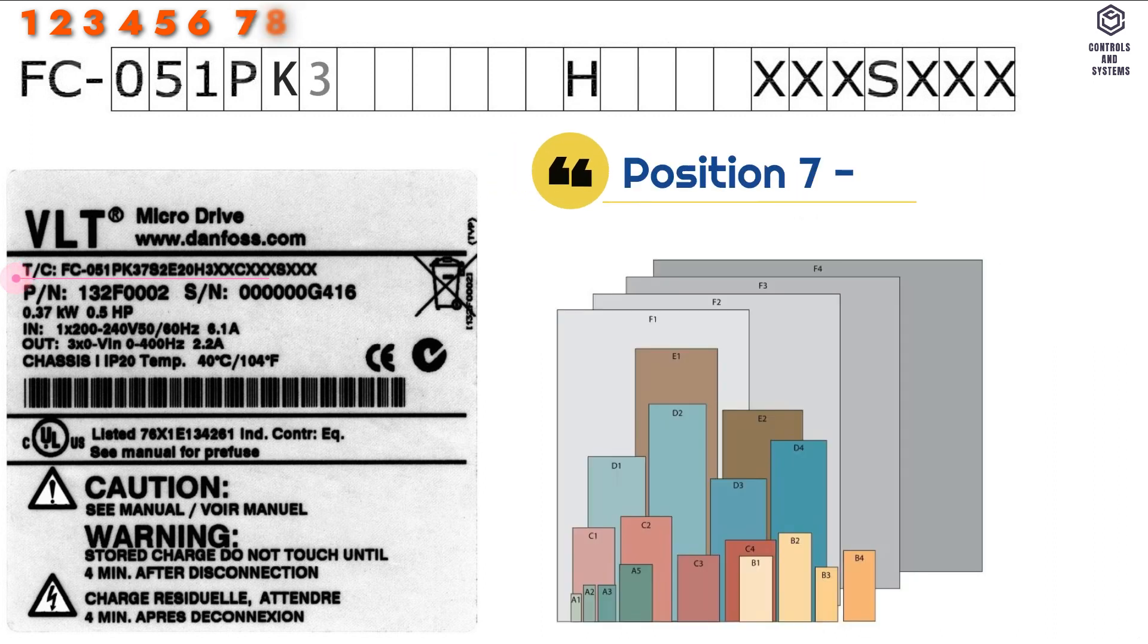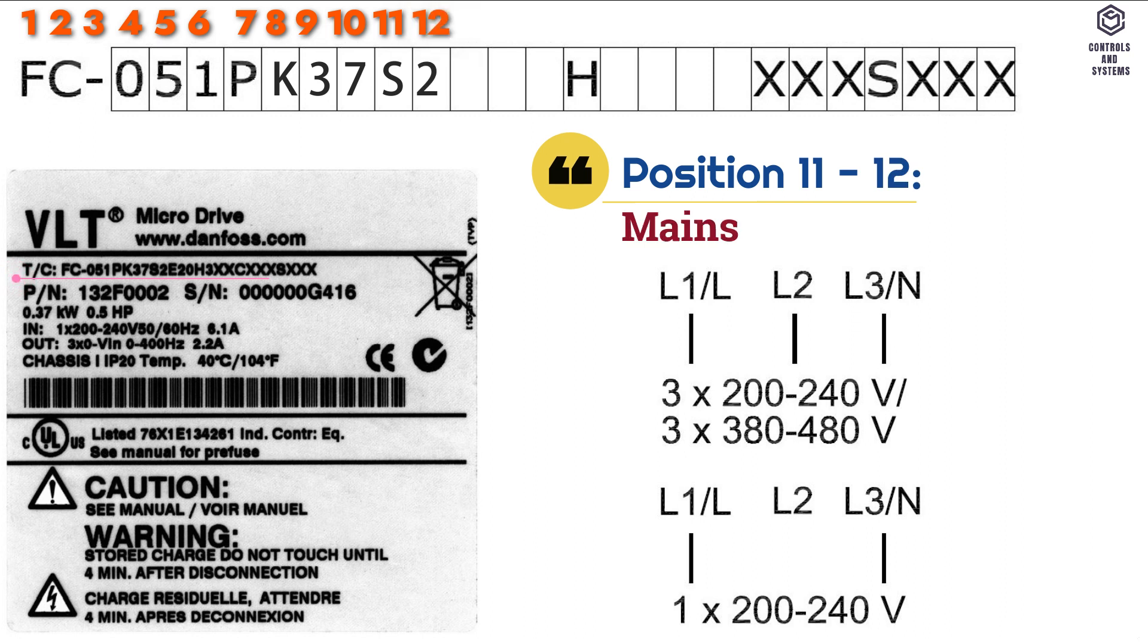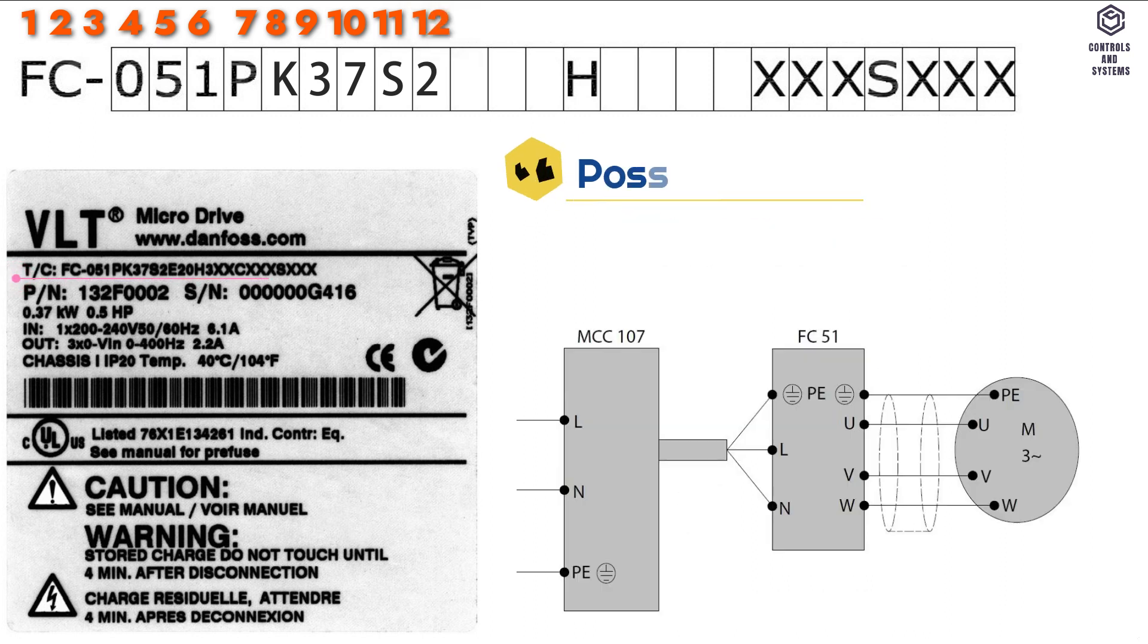Position 7 to 10 is power size, possible choice is 0.18 to 22 kW. Position 11 to 12 is mains voltage, possible choice is